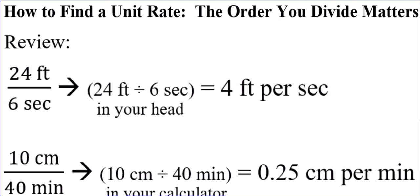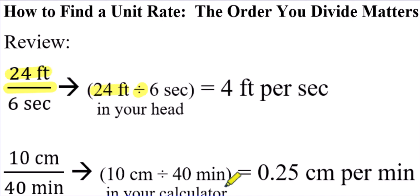How are you going to be able to find a unit rate? You're actually going to end up dividing. The order you divide matters. If I have 24 feet over six seconds, the fraction bar means division. The number on top is first and the number in the denominator is second. You would just do 24 divided by six in your calculator. 24 divided by six is four.